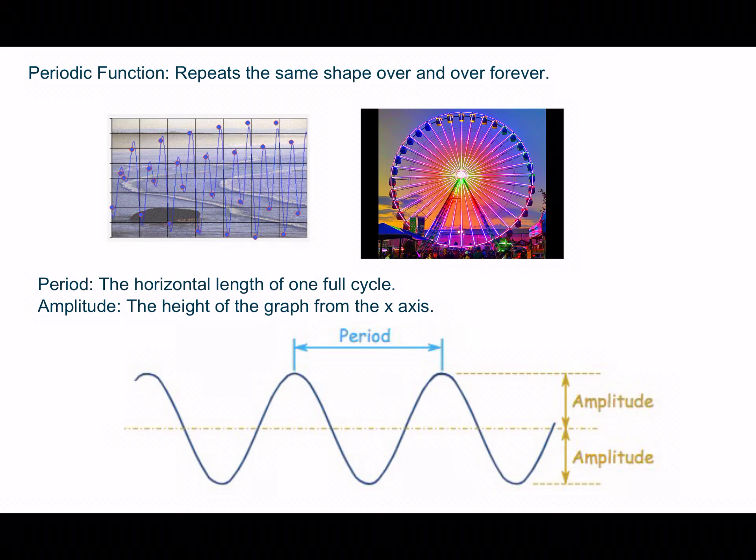So when the waves come in and out, it repeats that same cycle up and down, on and on, forever and ever. And the reason we're talking about these functions is because the trigonometric functions sine and cosine are two examples of periodic functions.